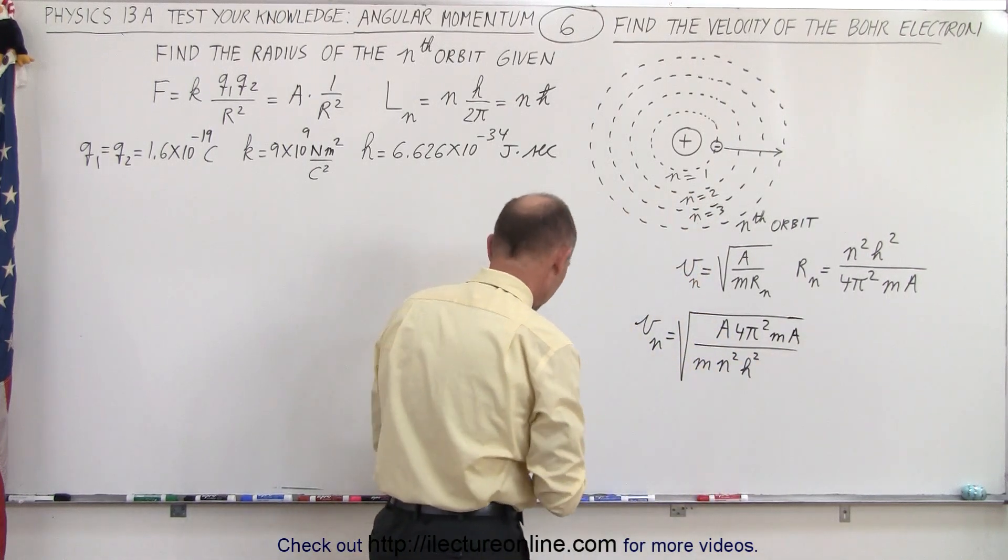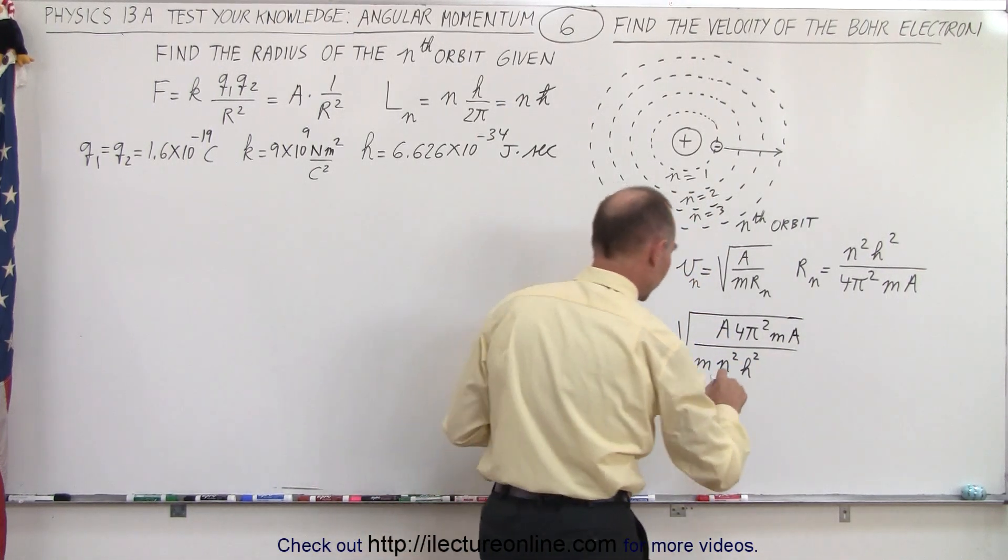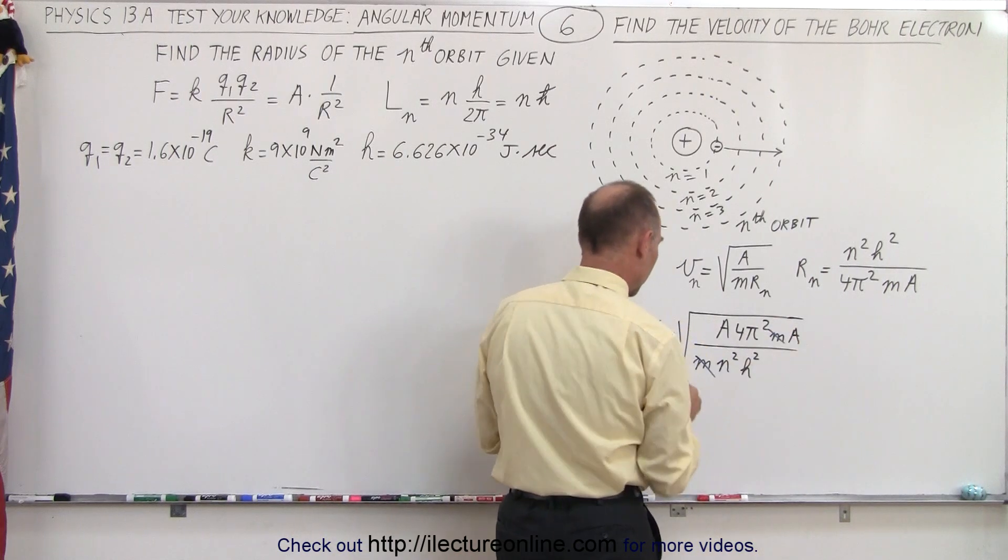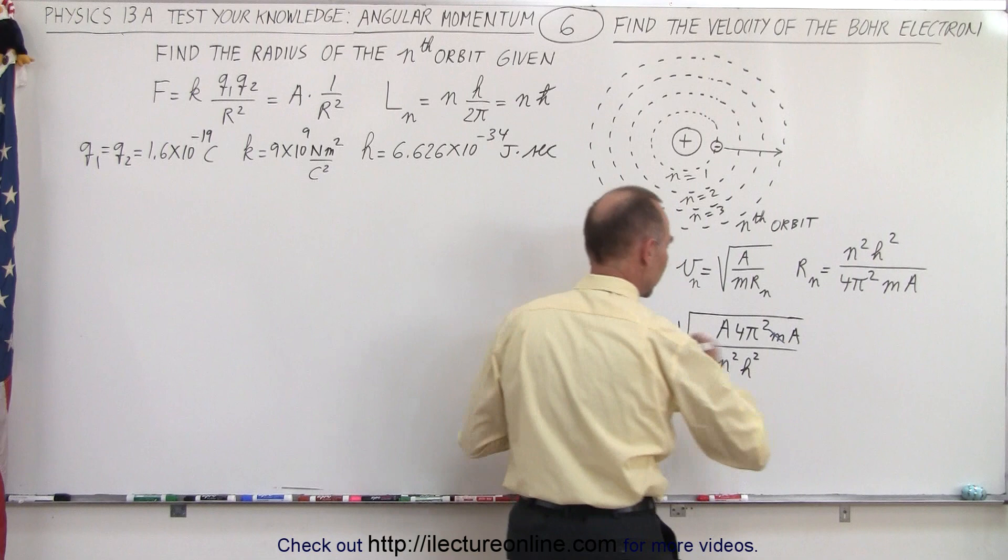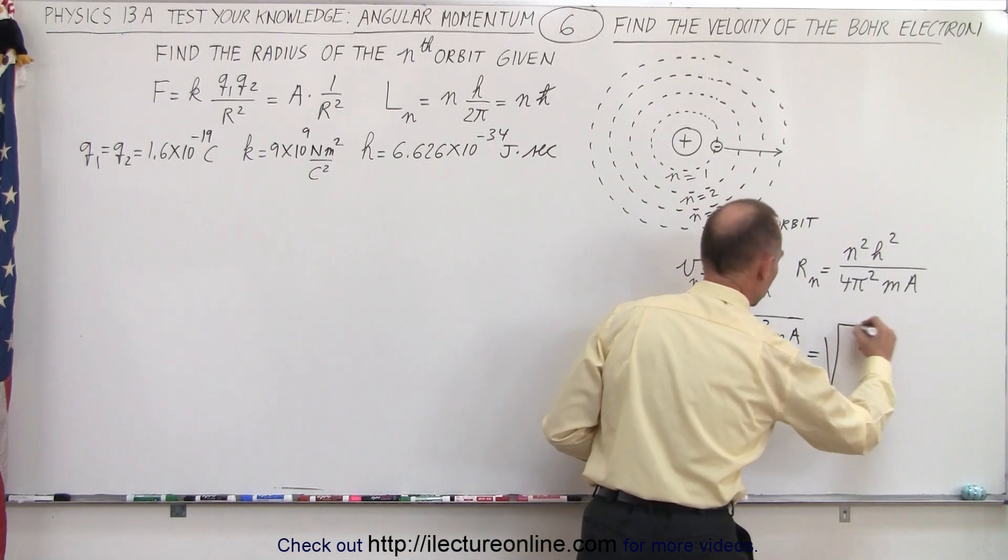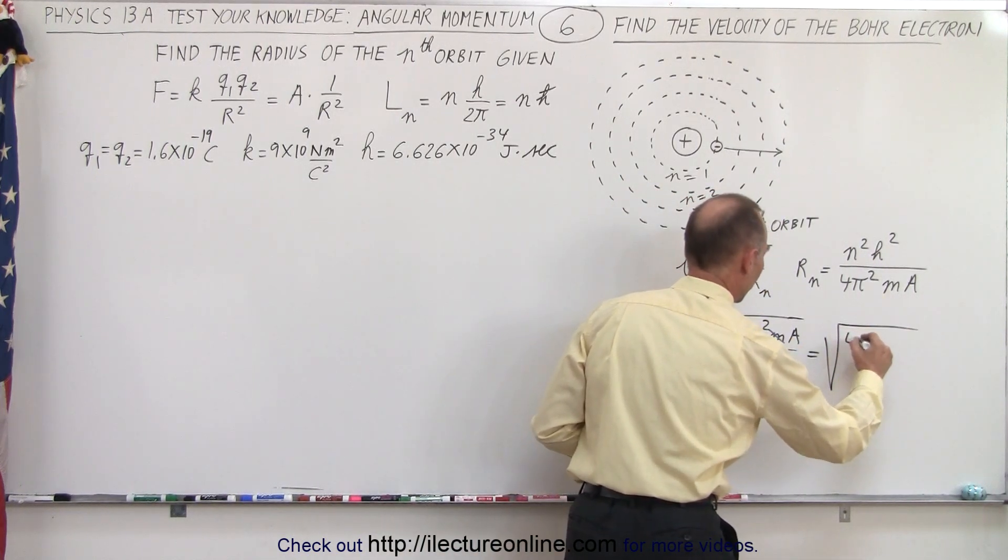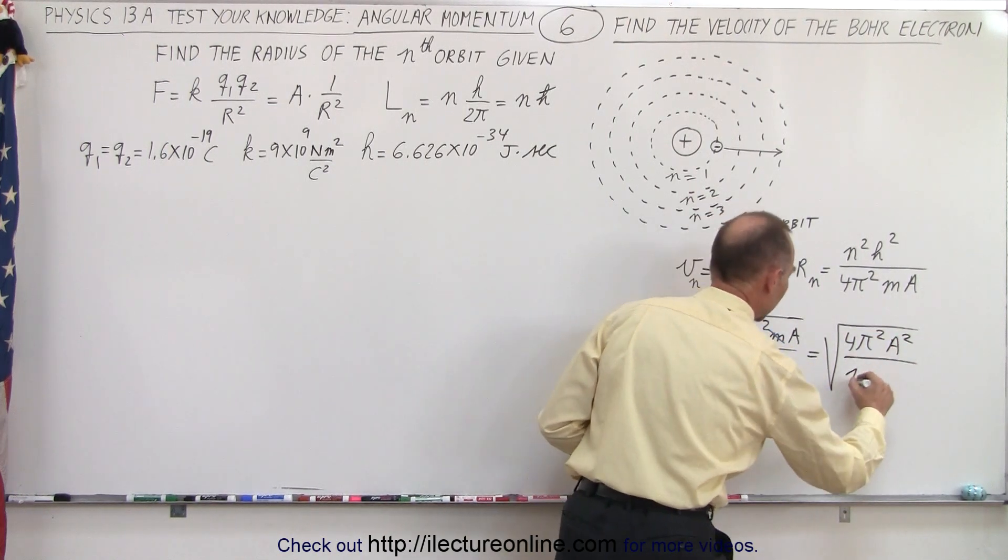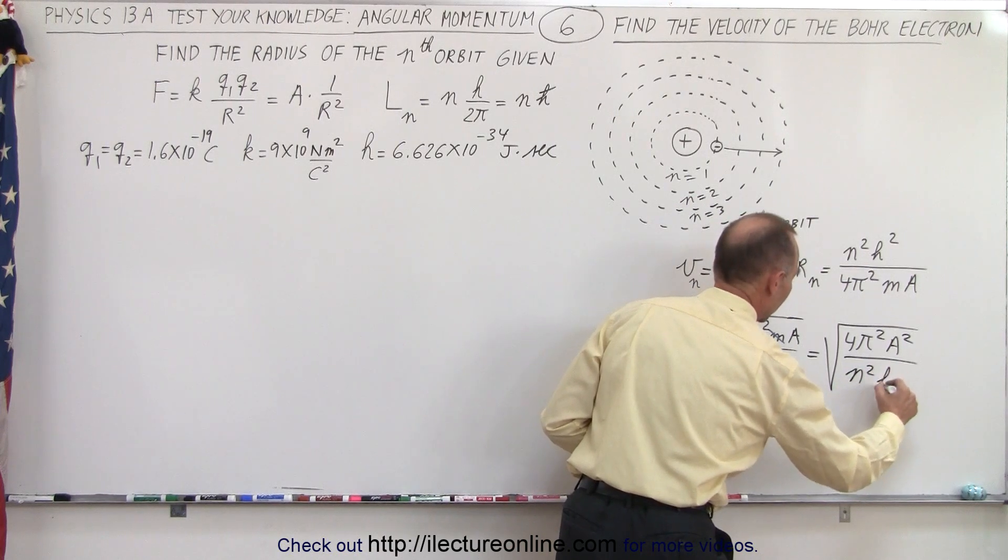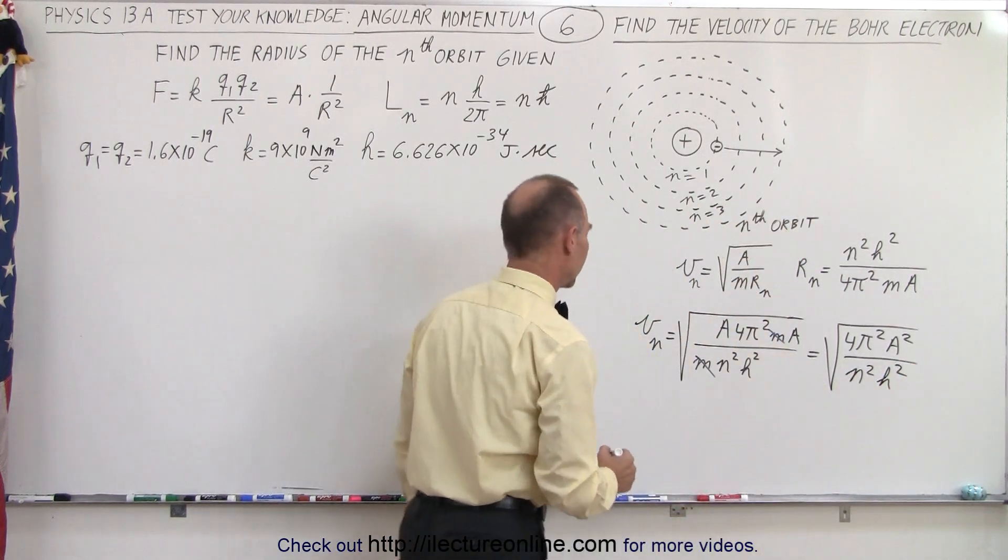That would be 4 pi squared m times a. Now notice that the mass cancels out, and we end up with a squared, 4 pi squared. Everything is squared now, so we have in the numerator, we have 4 pi squared a squared divided by, in the denominator we get n squared times h squared, h being Planck's constant.